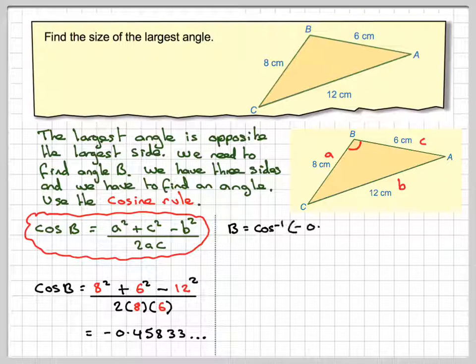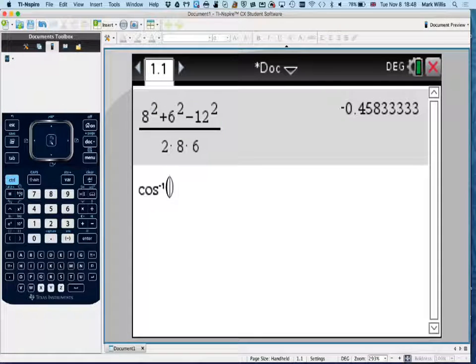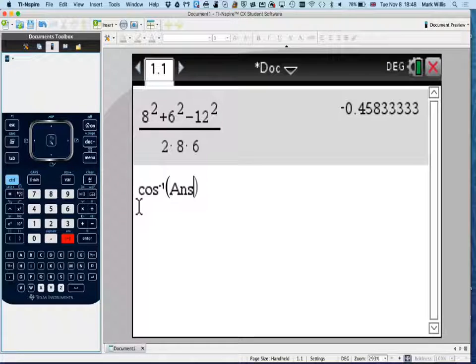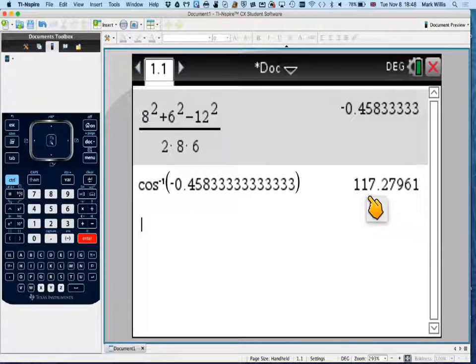Now, we need to do cos to the minus 1 of this, but we'll just pop over to our calculator again. Let's do this. We'll just do trig, cos to the minus 1. We won't need to type this in again, because all we need to do is control and answer. So, that puts the last answer in there, and we press enter. And we're going to get 117.27961.